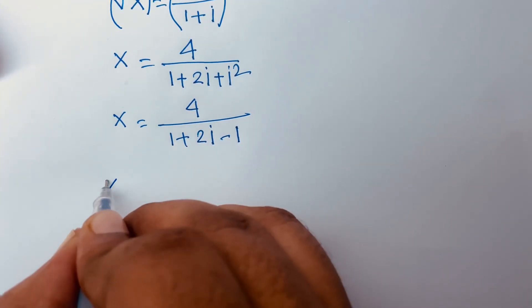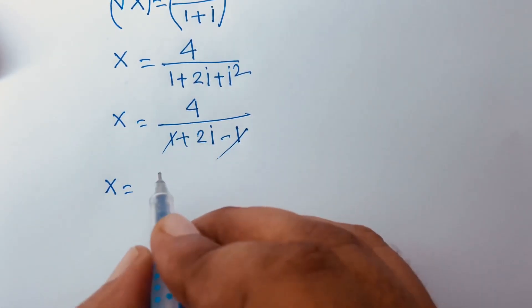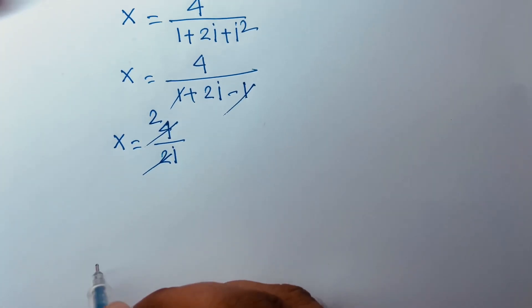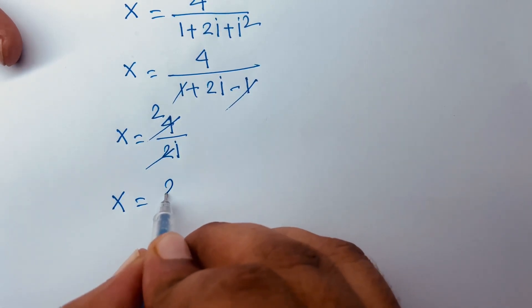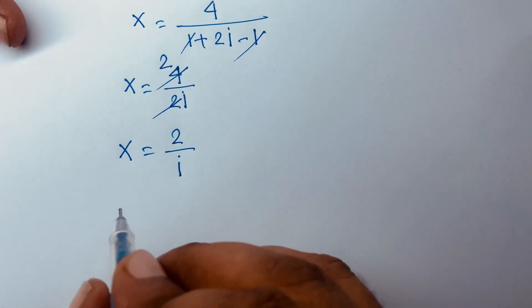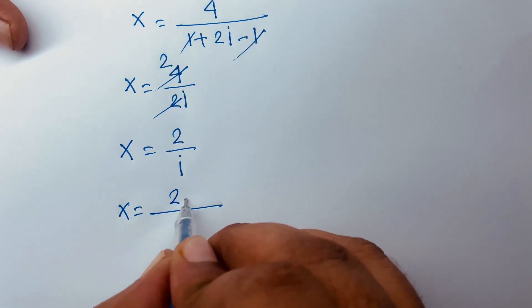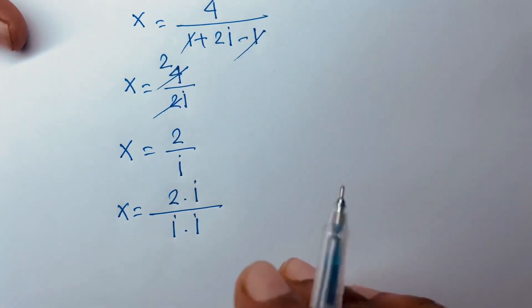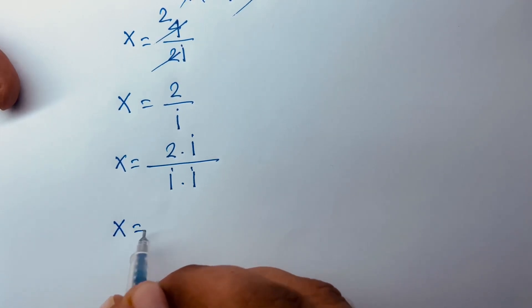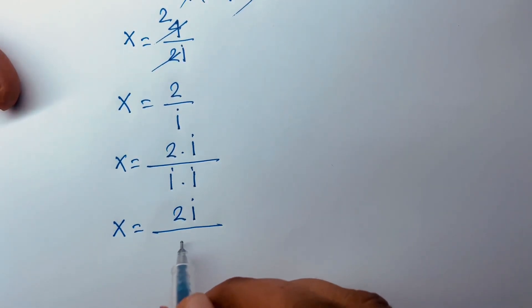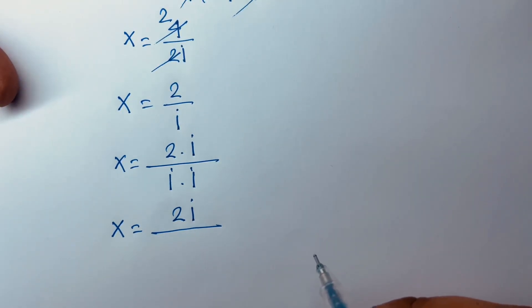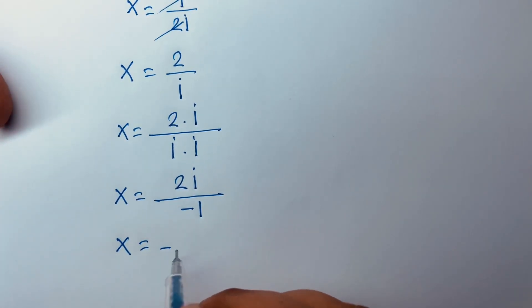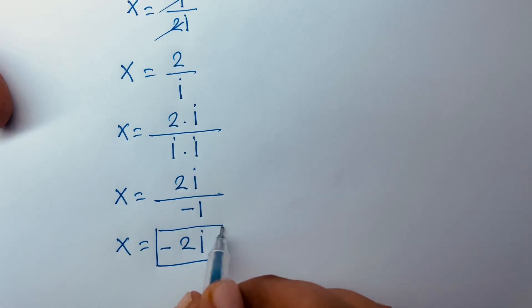Simplifying 4 over 2i gives x equals 2 over i. To rationalize, multiply numerator and denominator by i: x equals 2i over i², and since i² equals minus 1, we get x equals 2i over minus 1, which gives x equals minus 2i.